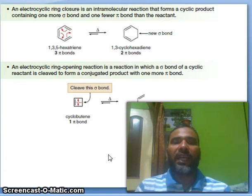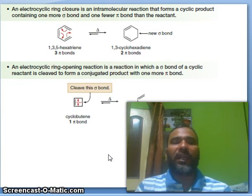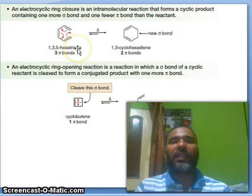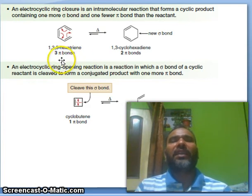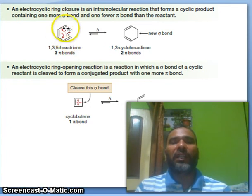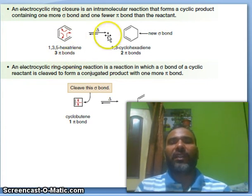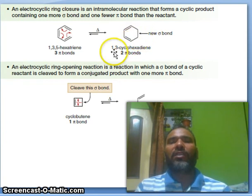So what is electrocyclic? Electrocyclic reactions are two types — either ring closing or ring opening. An electrocyclic ring closing is an intramolecular reaction that forms a cyclic product containing one more sigma bond and one fewer pi bond than the reactant. For example, 1,3,5-hexatriene has three pi bonds. Under heat conditions it converts into the cyclic form — 1,3-cyclohexadiene — with a new sigma bond and two pi bonds.